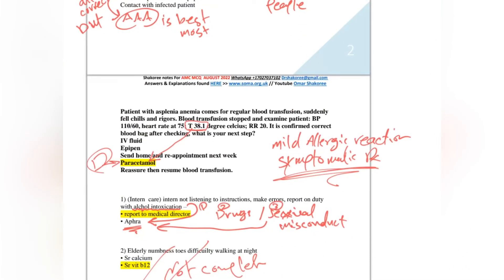Here we have a patient with anemia. This patient came for blood transfusion. Suddenly he got a mild fever and blood pressure normal, heart rate still normal, respiratory rate mildly elevated. So what to do as next step? This is called mild allergic reaction.